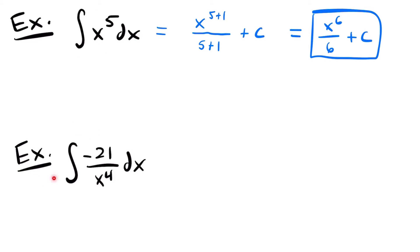Let's move on to our second example. We have the integral of negative 21 divided by x to the fourth power. The first thing I'm going to do is rewrite our integral. I'll start by pulling out this negative 21 — we can pull out constants to the outside of the integral — so I'll write negative 21 multiplied by the integral. Then let's move x to the fourth power to the numerator by giving it a negative exponent, so we'll have x to the negative fourth power dx.